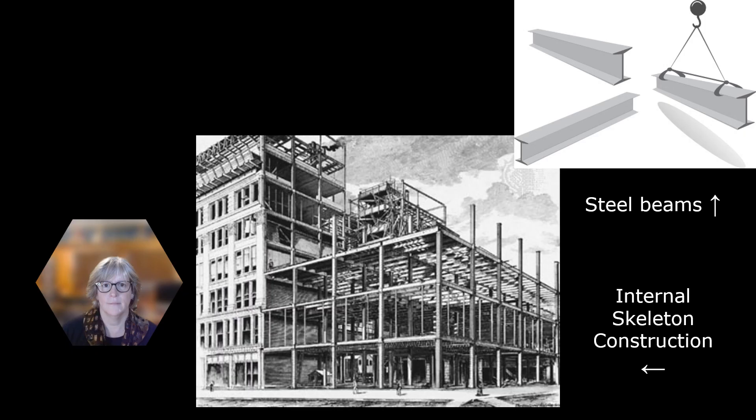Before the 19th century, the weight of a multi-story building was supported by the strength of the walls. So the taller the building, the more stress was forced onto the walls. These were called load-bearing walls. This meant that the walls of the ground floors were very thick and there were limits as to how high they could build.